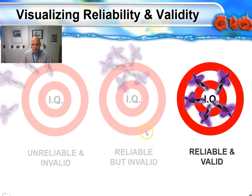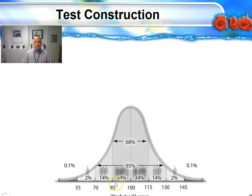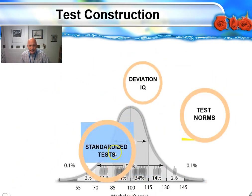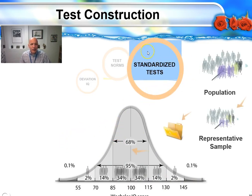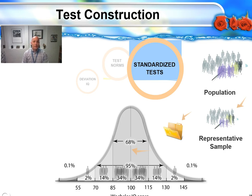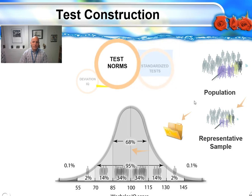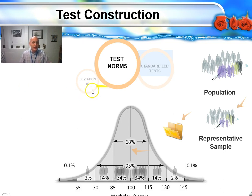An IQ test must actually be measuring intelligence, not cultural knowledge. As we create a test, we do this by standardizing it based on the population. The population should be taken from a representative sample — we can't measure the intelligence of everyone in the United States, so we simply get a sample. In standardizing a test, we are creating norms and making sure items really measure what we're trying to measure, and that the statistical breakdown of the sample is representative of the population.